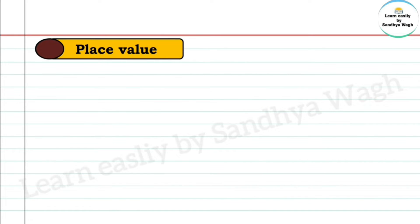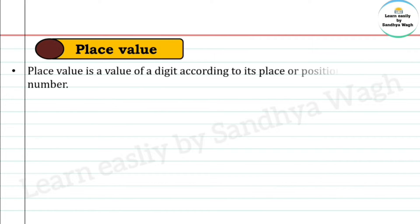Now let's learn about place value. Place value is the value of a digit according to its place or position in the number.